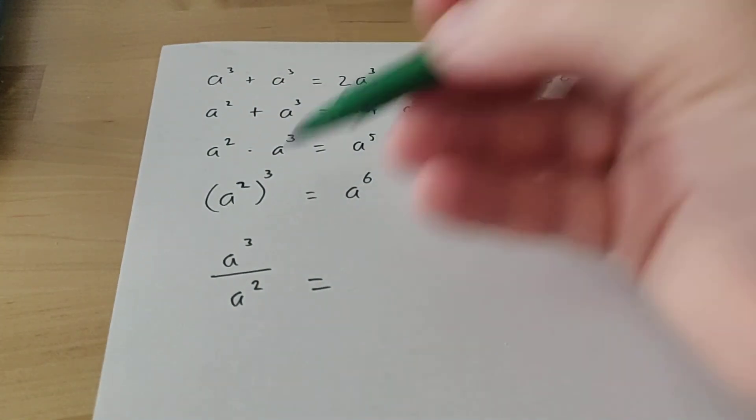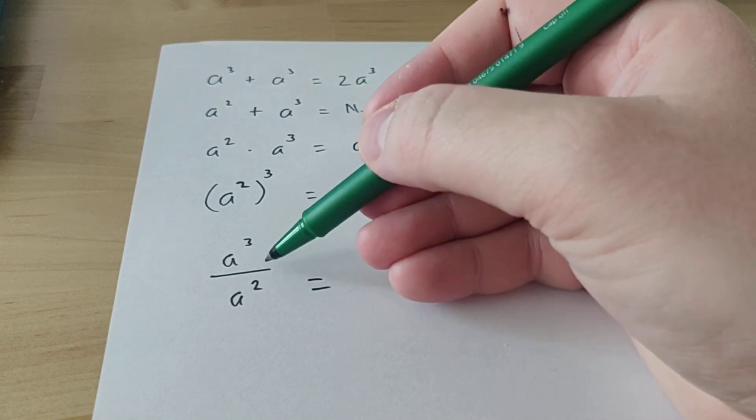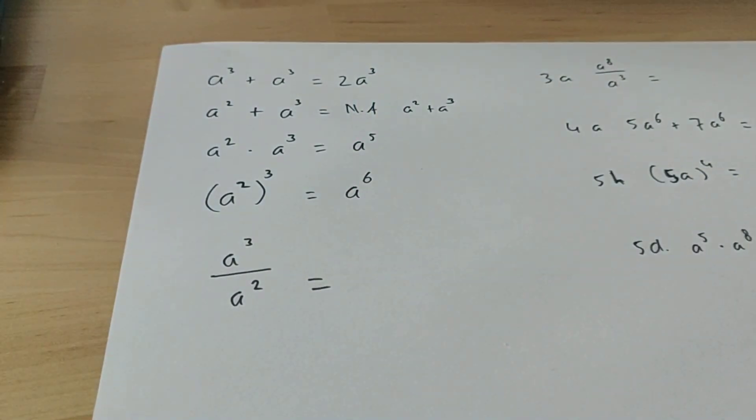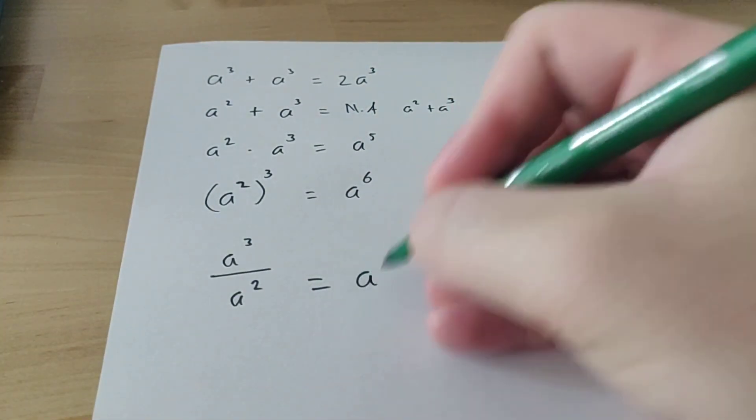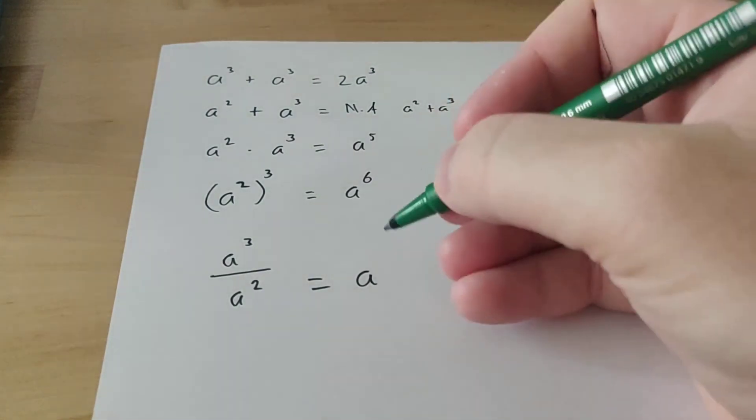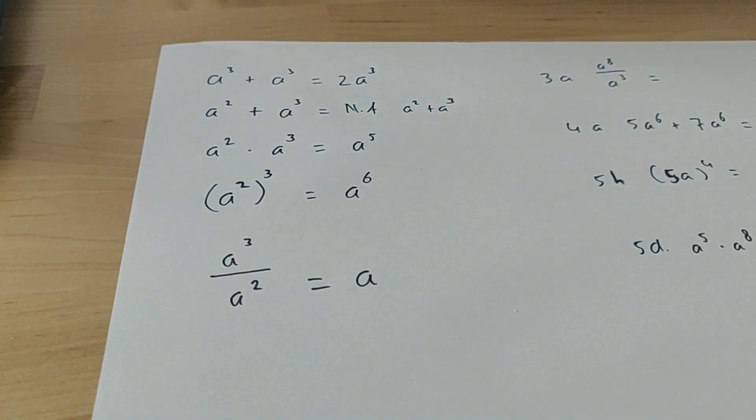With the divided by, you have a to the power of 3 divided by a to the power of 2. Then you do minus, so this is a to the power of 1. And to the power of 1 we never write down, so you can just write down a. So these are all the rules, so that's what you should know if you want to make the exercises.